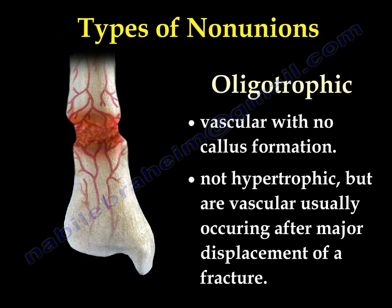The second type is called Oligotrophic — oligo means a little. So there is blood supply with little or no callus formation; it is not a lot of callus formation. It usually occurs after a fracture that has had major displacement.